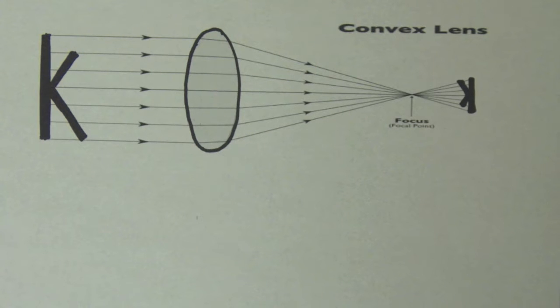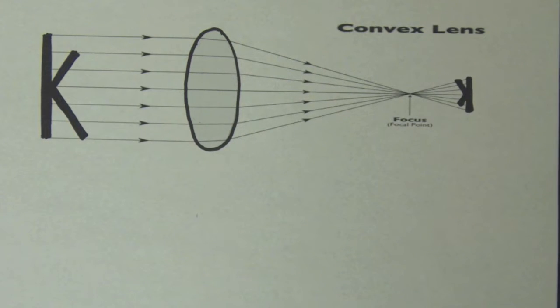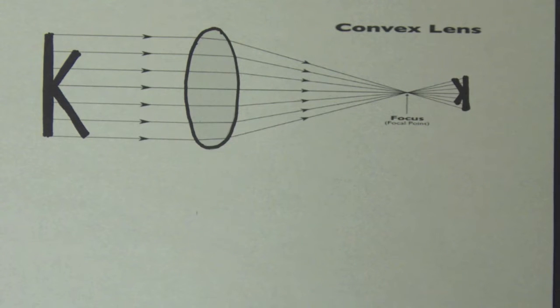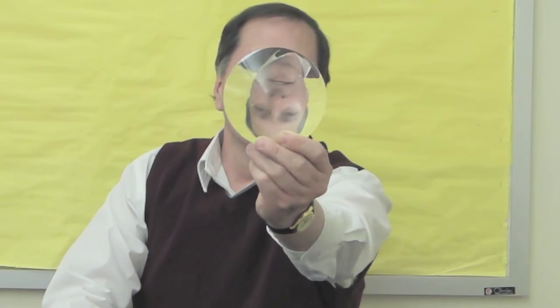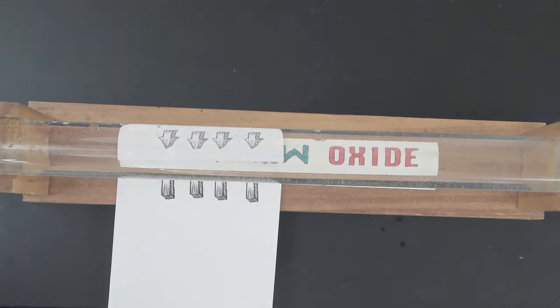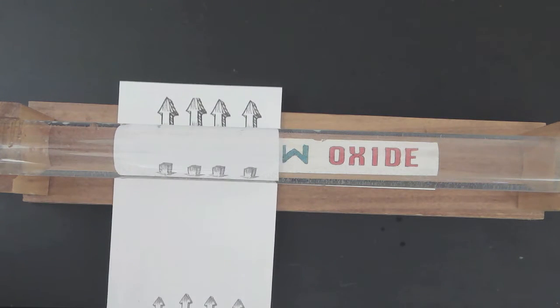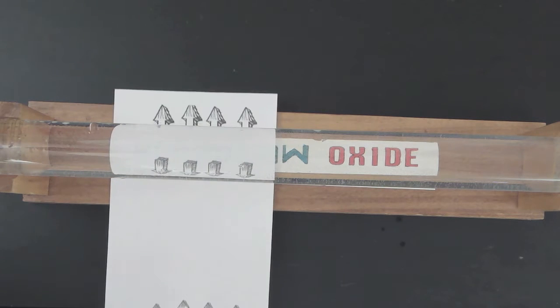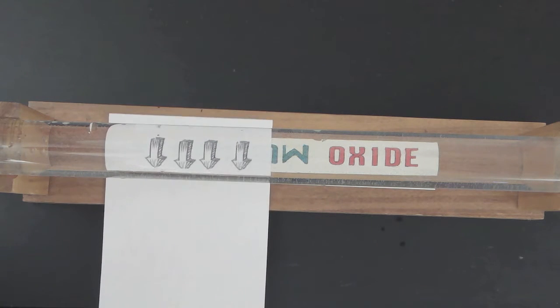And anytime we view an image through this type of lens, it'll take the image and invert it or turn it upside down. For example, these arrows show us what's happening to the letters of the word aluminum. When they are sitting directly underneath this lens, they're turned upside down, so you can't read them.